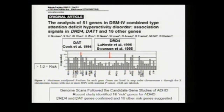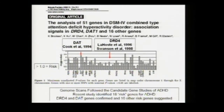The dopamine receptor D4 gene has a VNTR in exon 3, a 48 base pair repeat sequence. The seven-repeat allele, with a relative frequency of around 15% in the population, has been associated with ADHD and is elevated in allele frequency in many samples of children with ADHD. This was discovered by my group at UC Irvine in 1996.